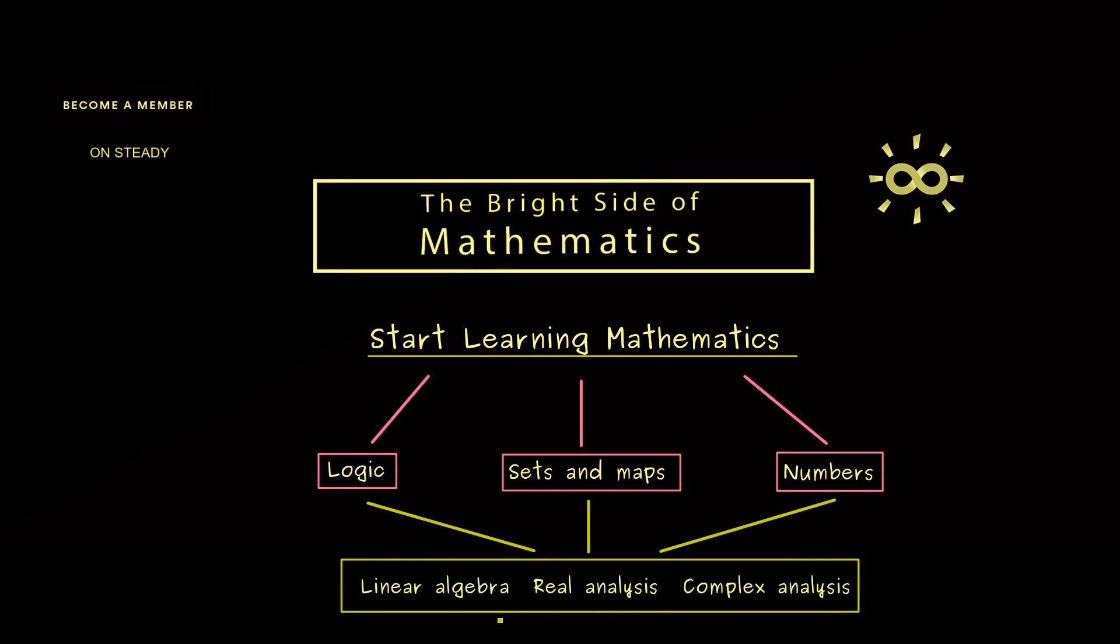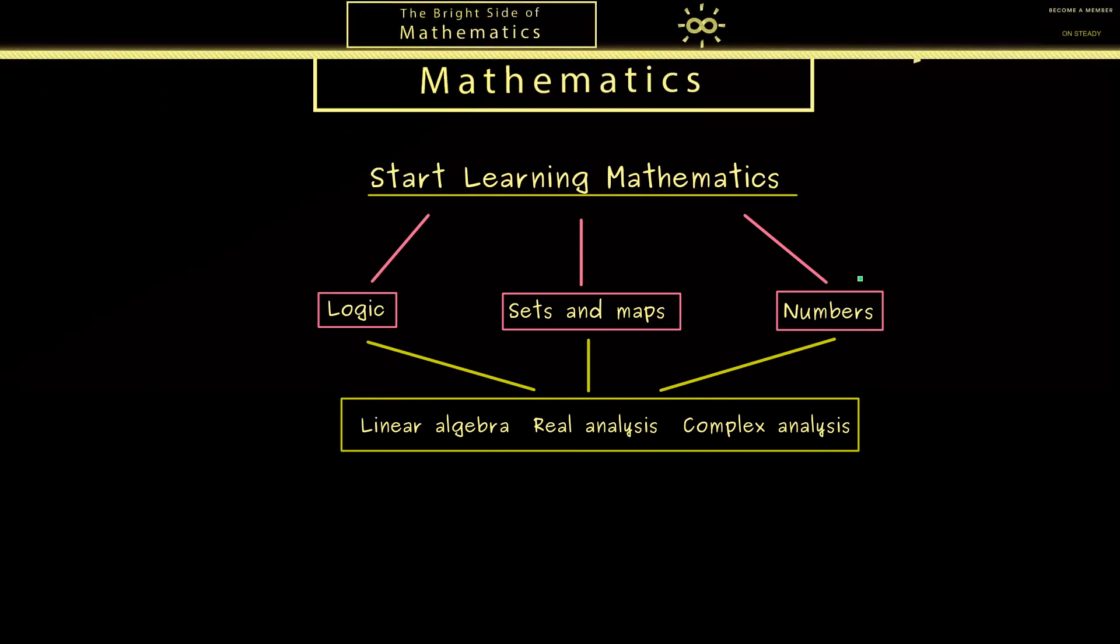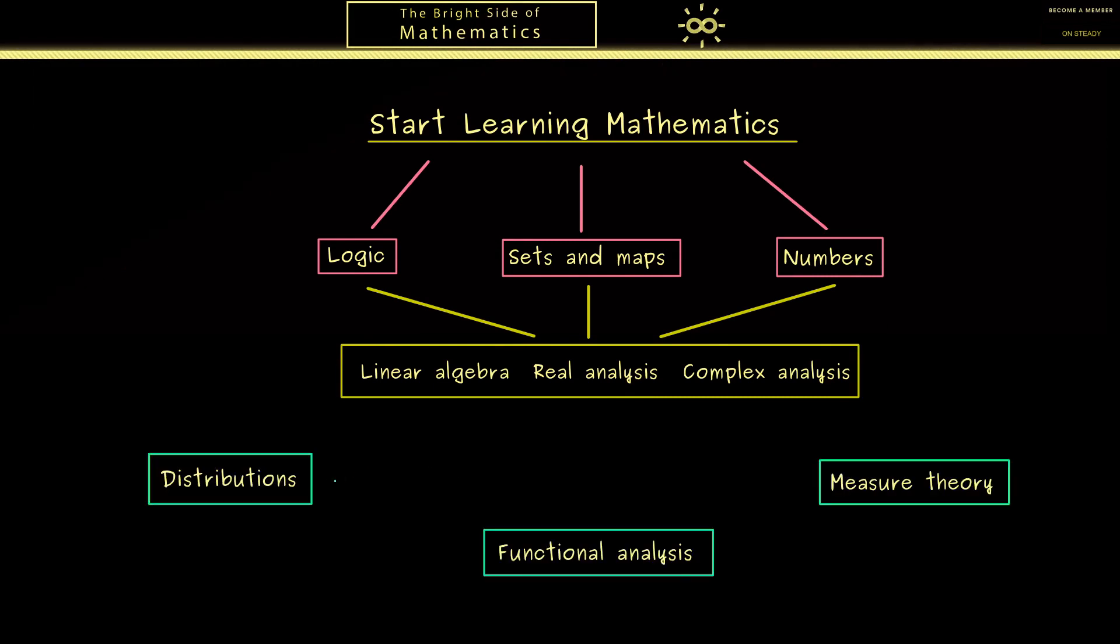For example, a linear algebra course, a real analysis course, and also a complex analysis course. Then the next level would be my advanced courses that are already there. Of course you don't need all the knowledge from before to understand these topics but at least you need some ideas.